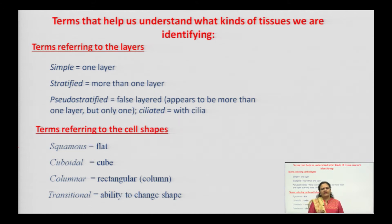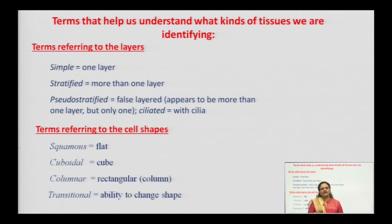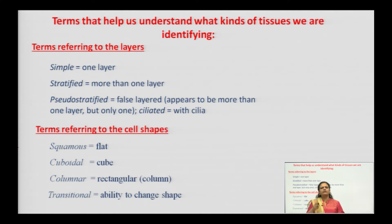Another classification is according to cell shape. According to the shape of individual cells, how is the tissue named? The first is squamous — flat cells attached to the basement membrane. The second is cuboidal — cube-like structures of individual cell layers. The third is columnar — column-like or rectangular in shape.